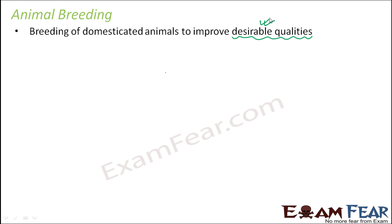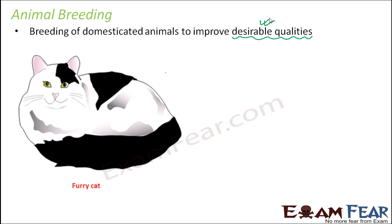What do we mean by desirable qualities? Let us take the example of a cat. There are many different varieties of cats — some have a lot of fur on their body, some are very skinny, some are very big, and some are quite small. Any quality which is more desirable — for example, if you consider a furry cat which has a lot of fur over its body, this fur can cause a lot of allergic reactions to human beings.